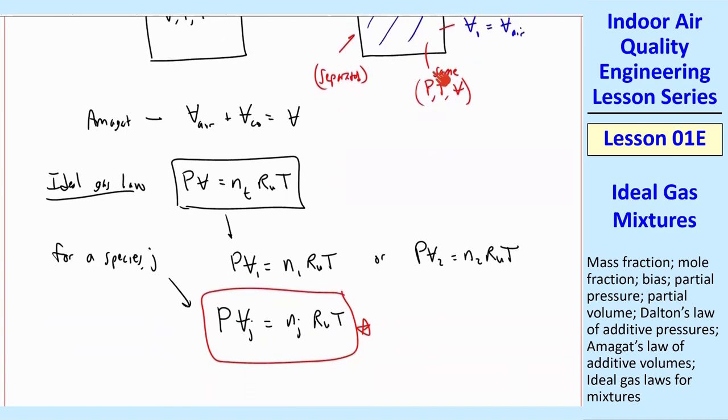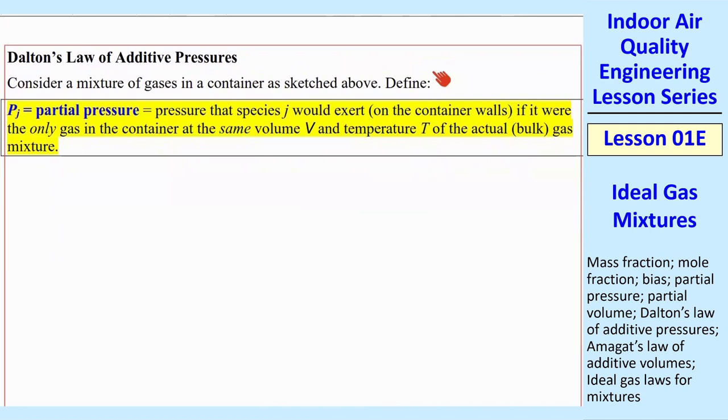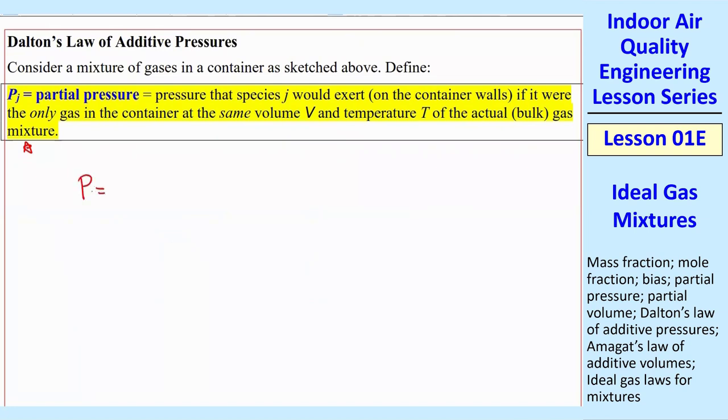There's something very similar called Dalton's law of additive pressures. We define partial pressure instead of partial volume, pressure that species J would exert on the walls, if it were the only gas in the container at the same volume and temperature of the actual bulk gas mixture. So that is our Dalton's law, which is very similar to Amagat, except now we're dealing with partial pressures instead of partial volumes. So we can write Dalton's law mathematically as total pressure is sigma J equal one to capital J of all the partial pressures. So all these pressures add up to the total pressure.